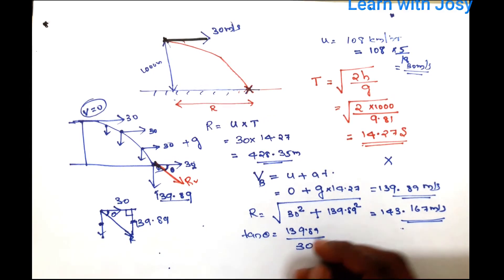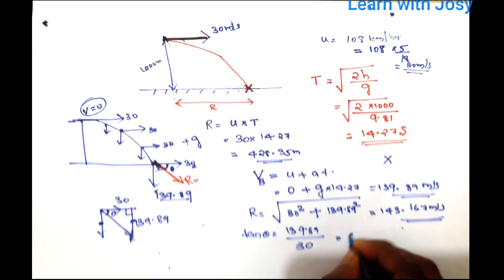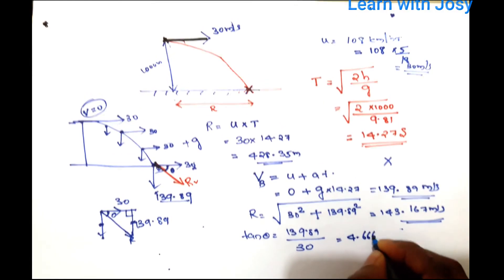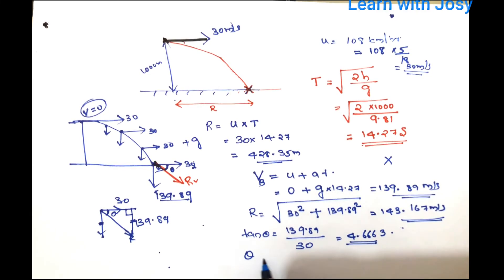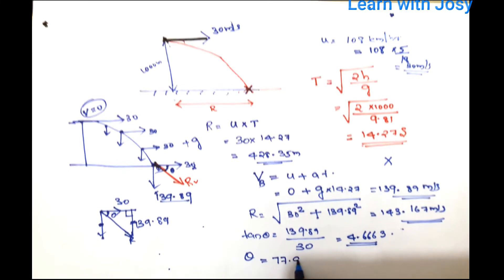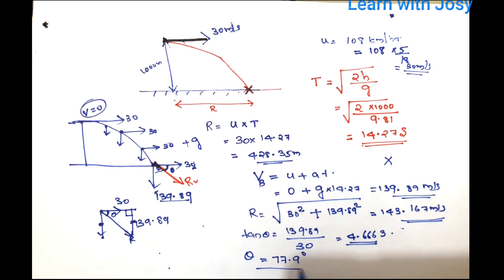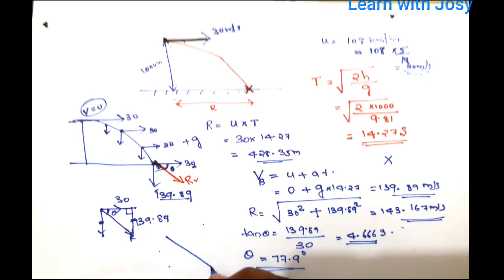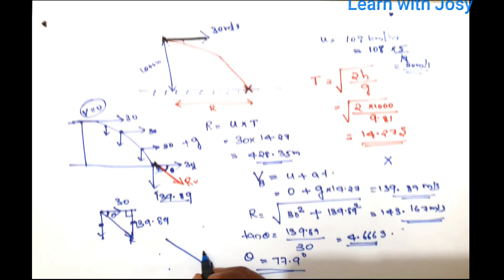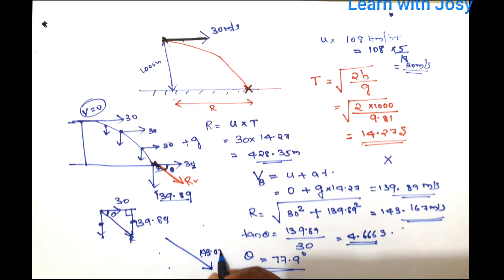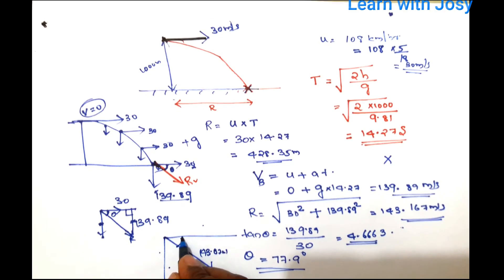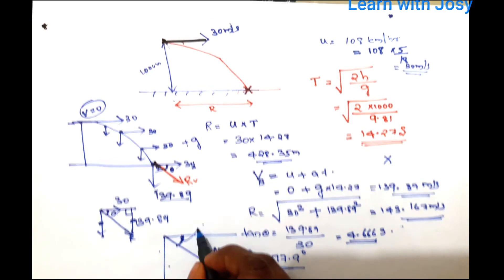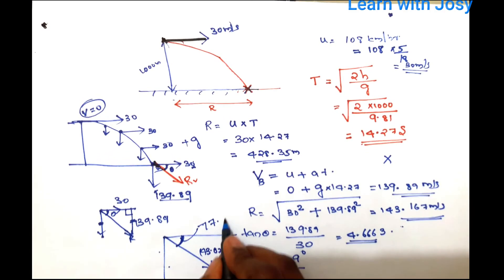This gives tan θ ≈ 4.663, so θ ≈ 77.9 degrees. The resultant velocity is approximately 143.07 meters per second at a direction of 77.9 degrees below the horizontal.